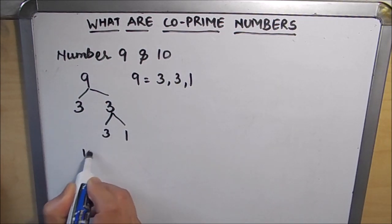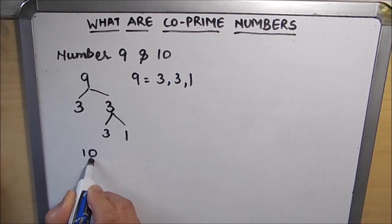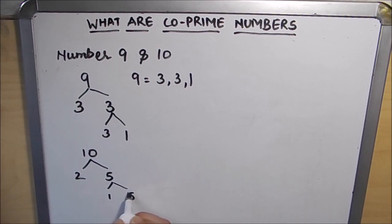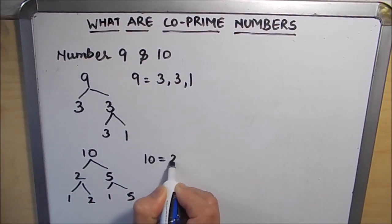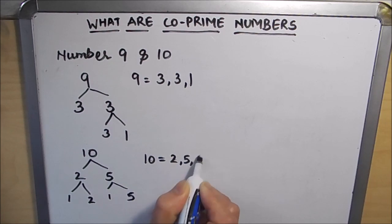Similarly, we will find the factors of 10: 2, 5, 1, 5, and this is 1 and 2. So the factors of 10 are 2, 5, and 1.